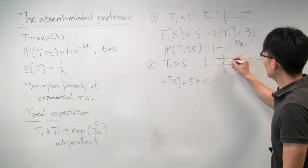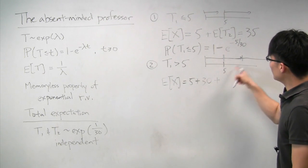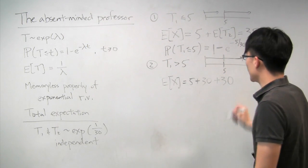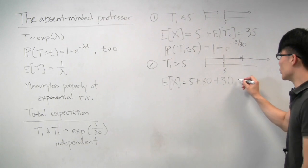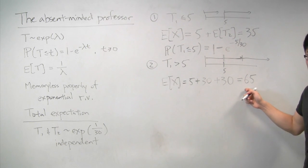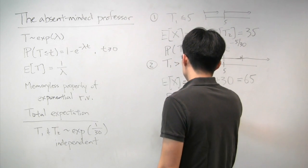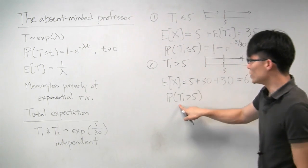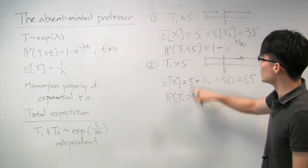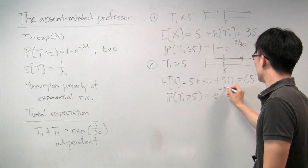So in scenario 2, you get the guaranteed 5 minutes, plus a memoryless continuation of 30 minutes for the first student, plus 30 minutes for the second student — giving an expected total of 65 minutes. The probability of this case is the probability that t1 is greater than 5, which is just the complement: e to the minus 5 over 30.